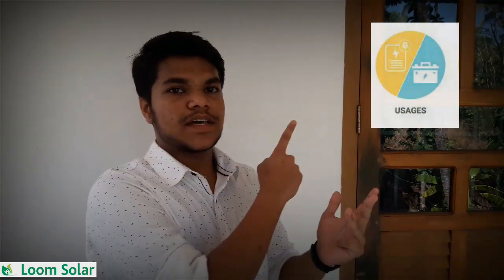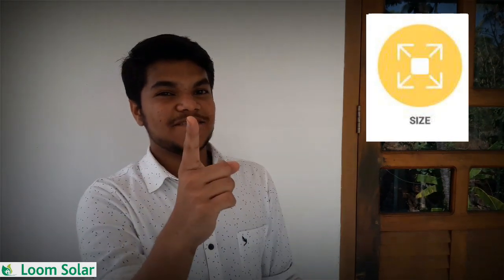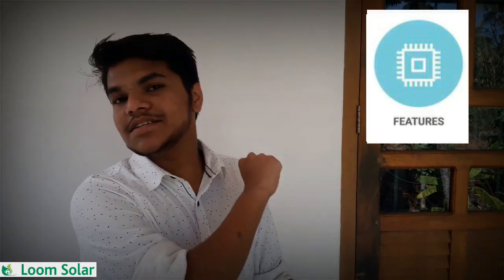When you look at a solar panel, there are 5 main things to check. If you want to evaluate a solar panel, you will need to consider these 5 things. First: usage. Second: capacity. Third: technology. Fourth: size. Fifth: features. We will discuss these 5 things in detail.